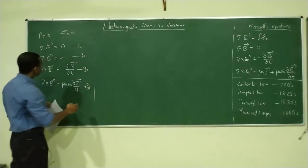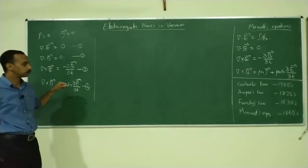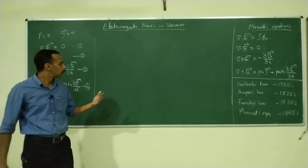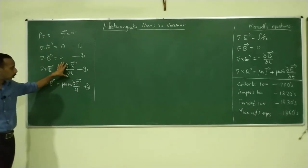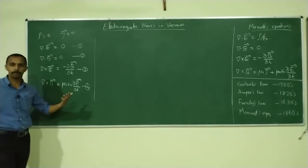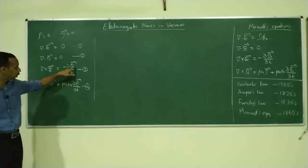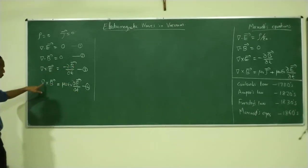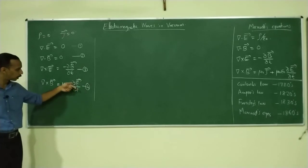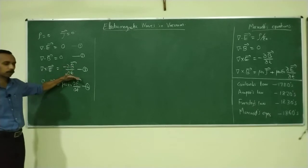These equations are four coupled first-order partial differential equations. You can see these involve derivatives with respect to space and derivatives with respect to time — only first-order derivatives. Coupled means, for example, del cross E is given by minus dou B by dou T, and B is defined by equation four — del cross B equals mu zero epsilon zero dou E by dou T — which in turn is defined using the electric field. So these are not independent equations; they are coupled equations.